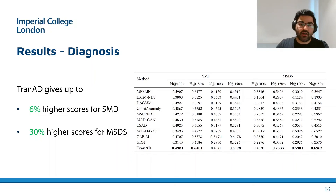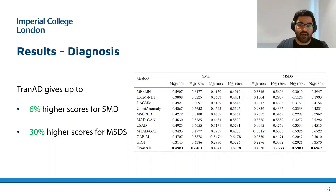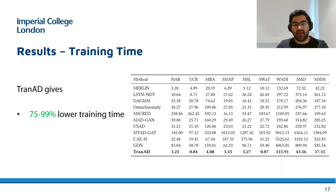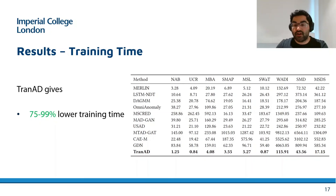This table shows the diagnosis results for two datasets for brevity. Here too, TRANAD is able to improve diagnosis scores by up to 6% for SMD and 30% for MSDS. Perhaps the most significant improvement is in terms of training time, where TRANAD gives anywhere between 75% to 99% reduction compared to the state-of-the-art baselines.